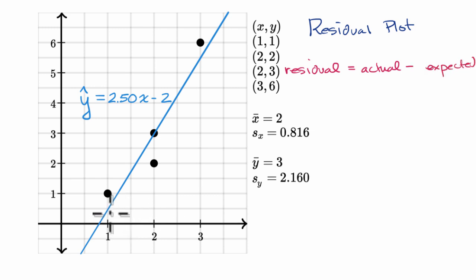So how do I make that tangible? Well, what's the residual for this point right over here? For this point here, the actual y when x equals one is one, but the expected when x equals one for this least squares regression line, 2.5 times one minus two, well that's going to be 0.5.